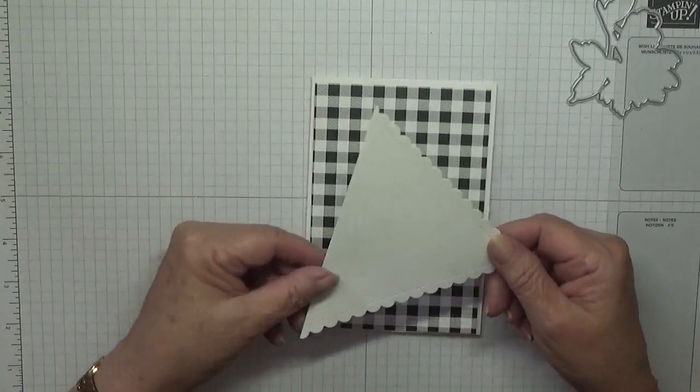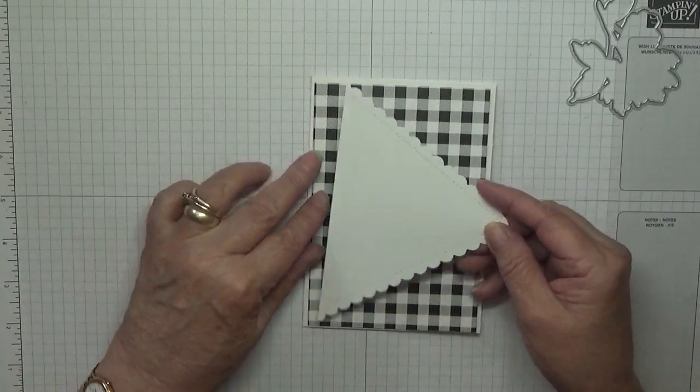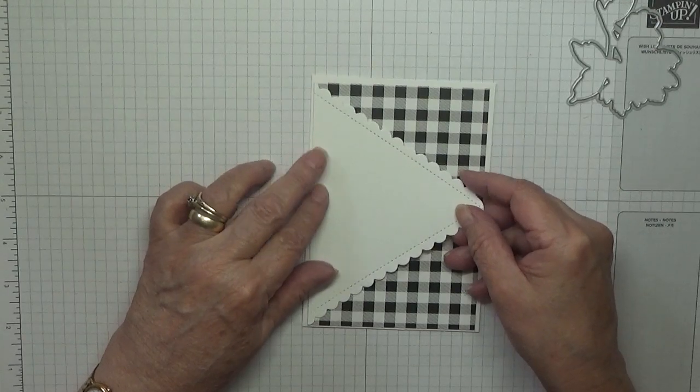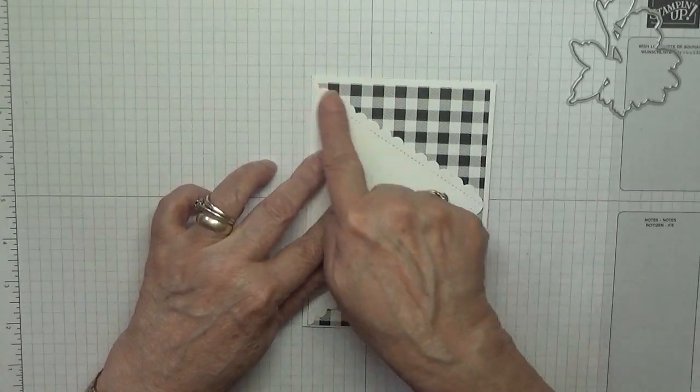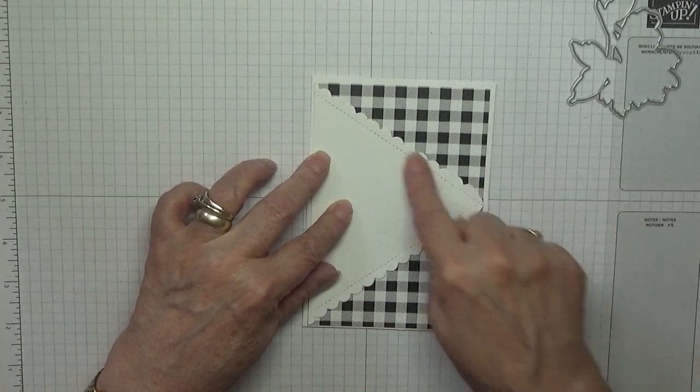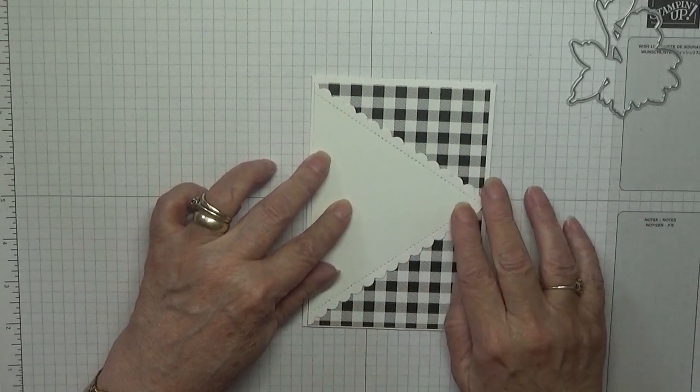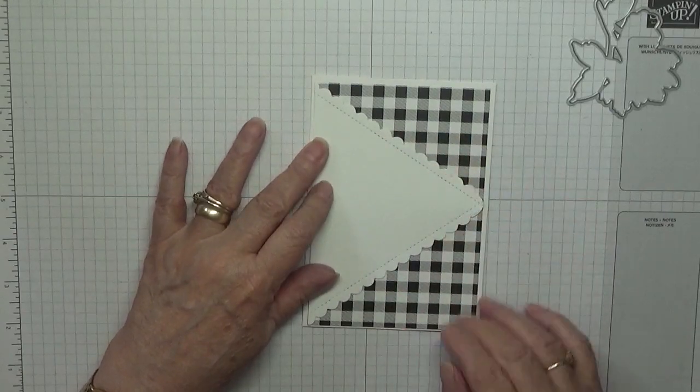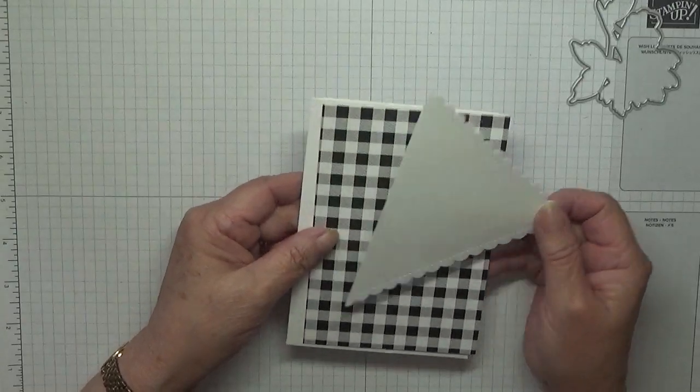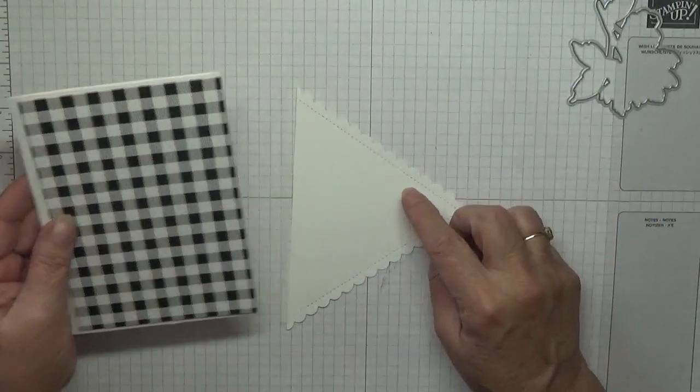I've also got another piece, this was five and five eighths by three and seven eighths and I just cut it diagonally like that, found the middle and then cut this off. This makes a change from a big flat white one, so we're going to stamp on there to start with.